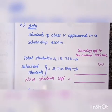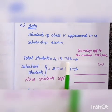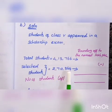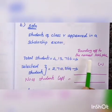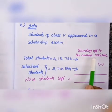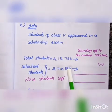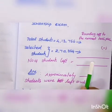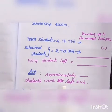Next, Problem B: Students of Class 5 appeared in a scholarship exam. Total students are 4,13,766. Selected students are 2,70,364. We need to find the number of students left. Round off both numbers to the nearest lakh place, then perform subtraction to find the approximate value and actual difference. Approximately that many students were left out.